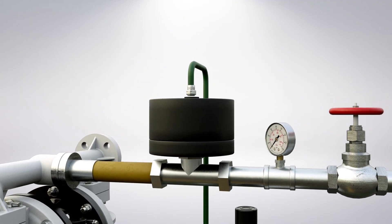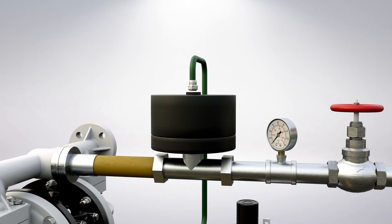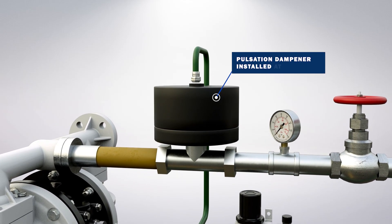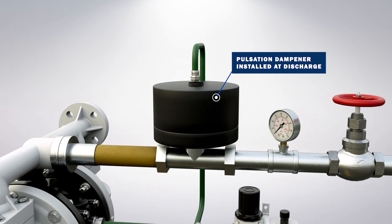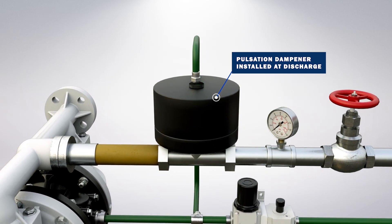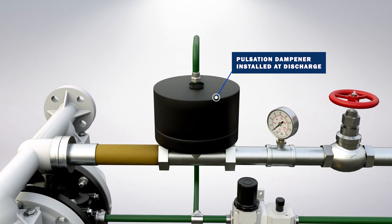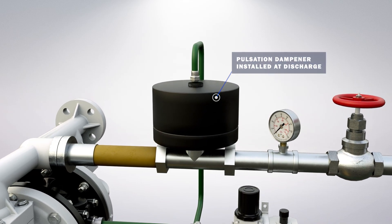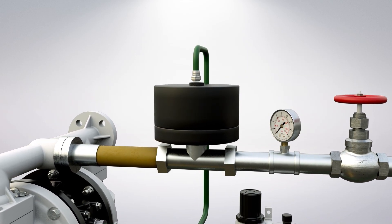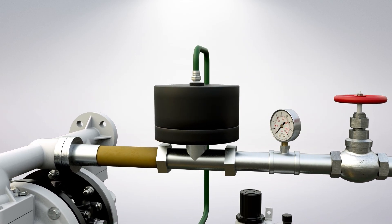For applications where the effects of pulsation should be reduced, a pulsation dampener can be installed on the discharge side of the pump to help provide a smoother discharge flow. This function is critical in applications that need to minimize system vibration to protect and enhance the accuracy of downstream instrumentation. It also extends equipment life by reducing the load on the pump.